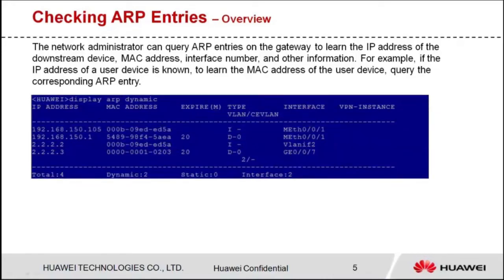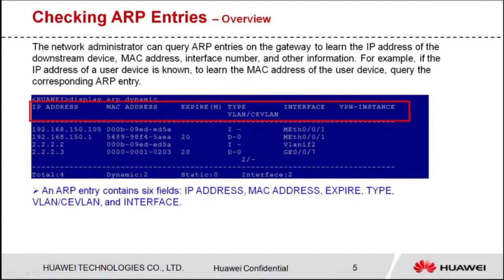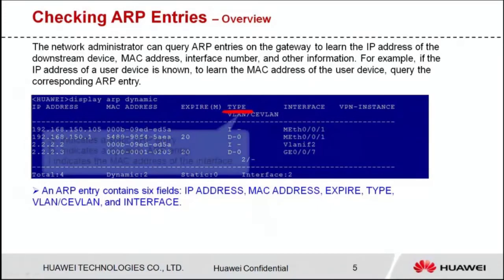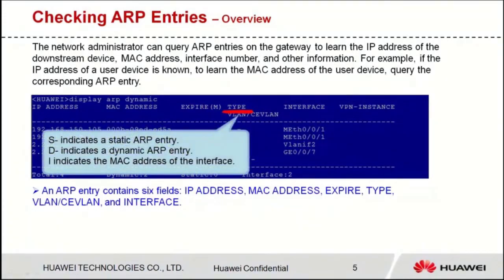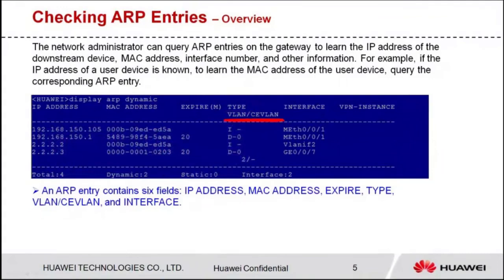Which fields does an ARP entry contain? An ARP entry contains the following fields: IP address, MAC address, expire, type, VLAN, CE VLAN, and interface. Expire indicates the remaining lifetime of an ARP entry. Type indicates the type of an ARP entry — S indicates a static ARP entry, D indicates a dynamic ARP entry, and I indicates the MAC address of the interface. VLAN and CE VLAN indicate the VLAN ID that the ARP entry belongs to. Interface indicates the type and number of the interface that learns the ARP entry.